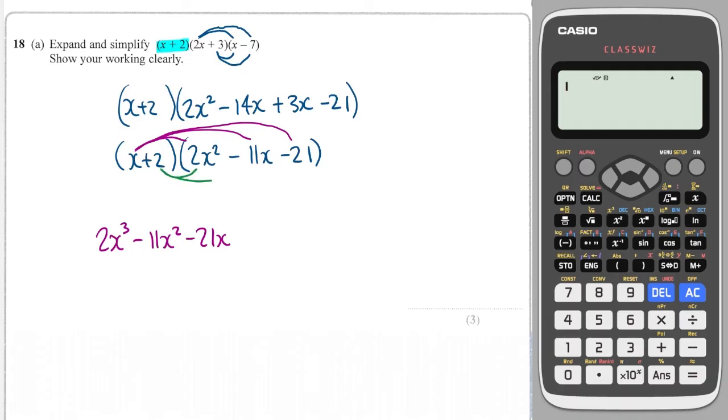So I go down the bottom here and multiply down these lines, and this way I'm sure not to miss any terms. So 2 times 2x squared is 4x squared, 2 times minus 11 is minus 22x, and 2 times minus 21 is minus 42.